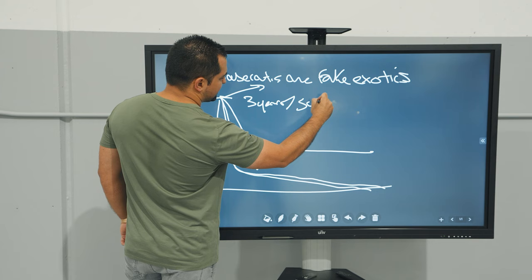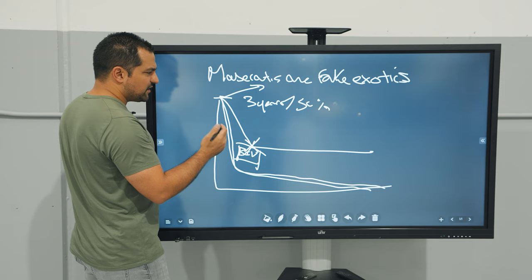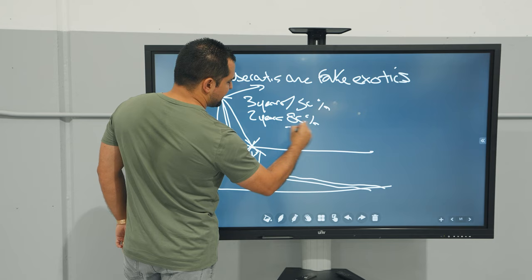Maseratis don't do that. Within the first two years they lose about 80% of their value and then depreciate all the way to zero. So here's how dealers have basically combated this.